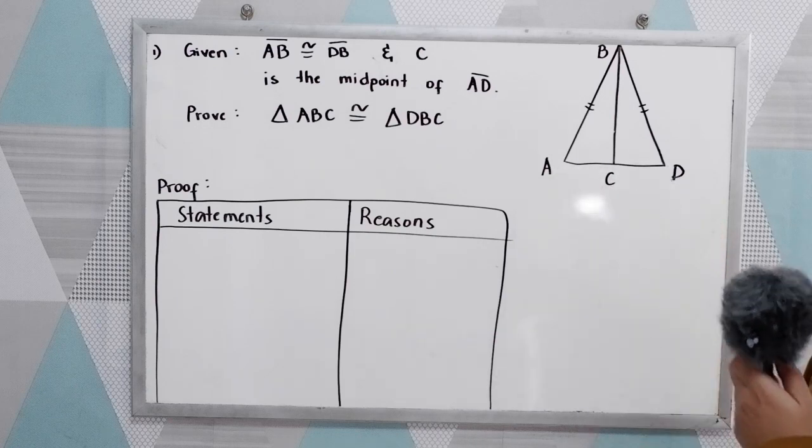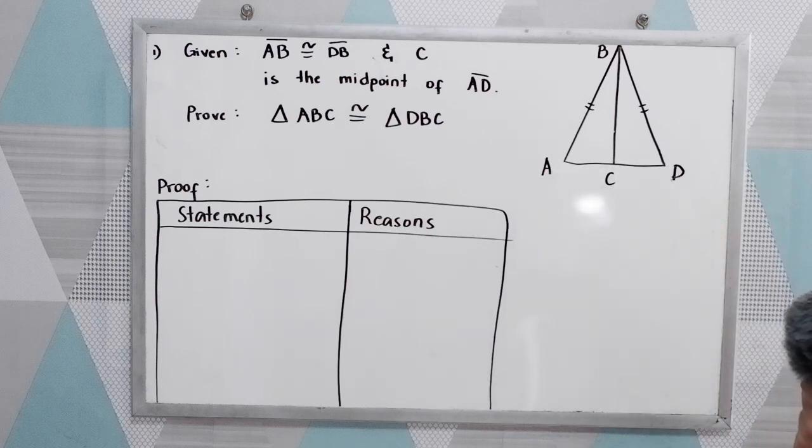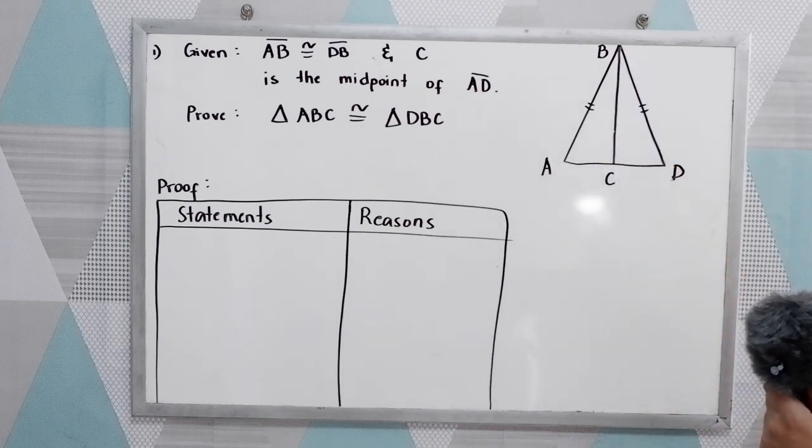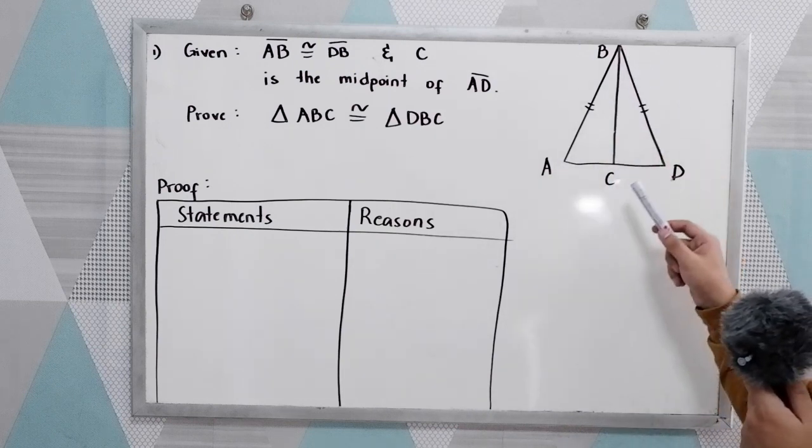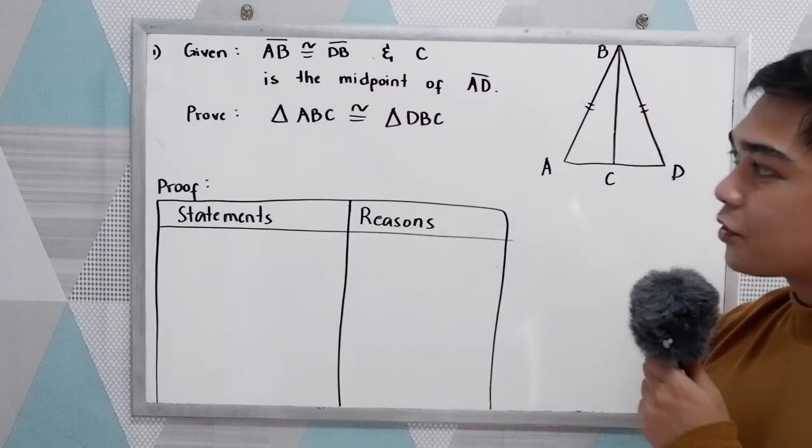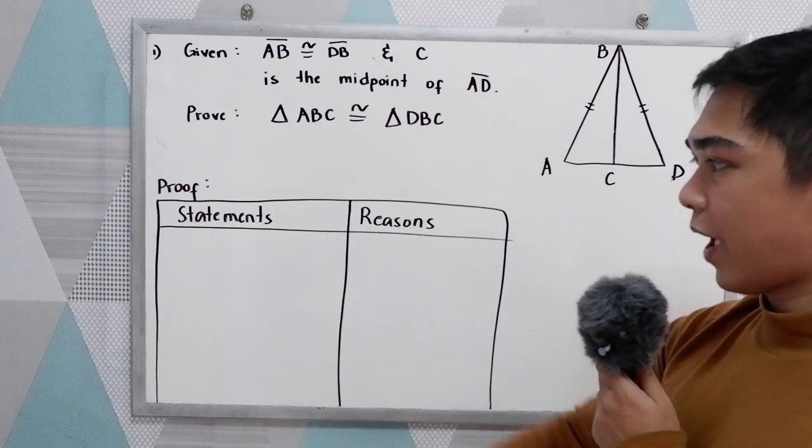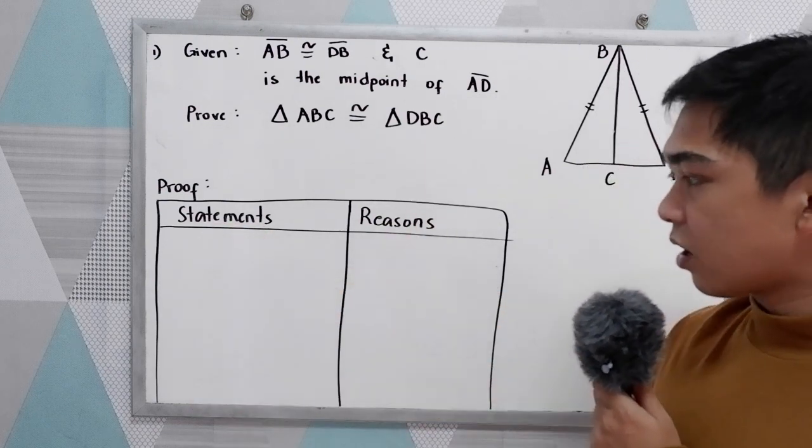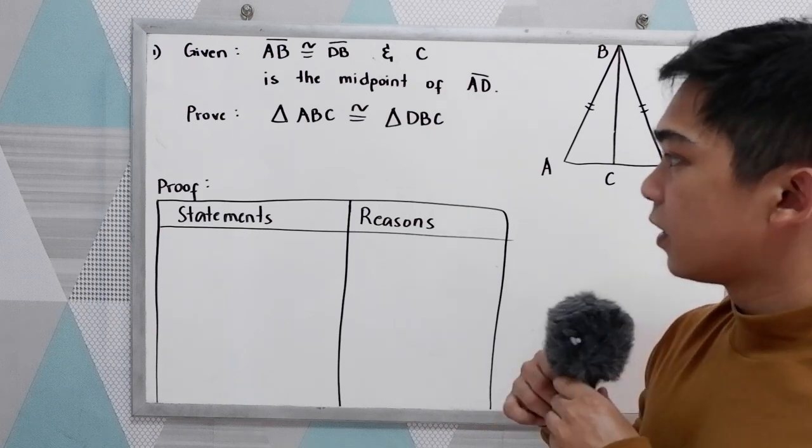Now we're going to prove that triangle ABC is congruent to triangle DBC. In writing two-column proof, we have here our first column for the statements and the second column for the reasons.